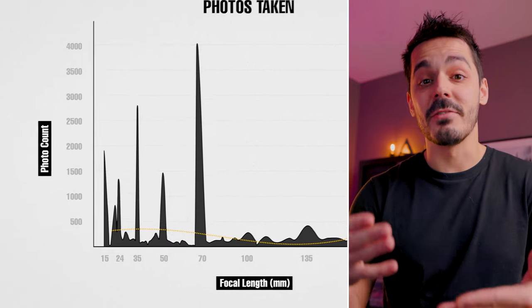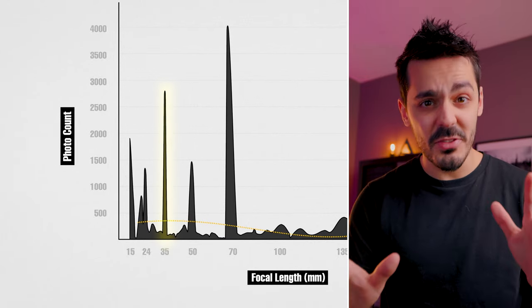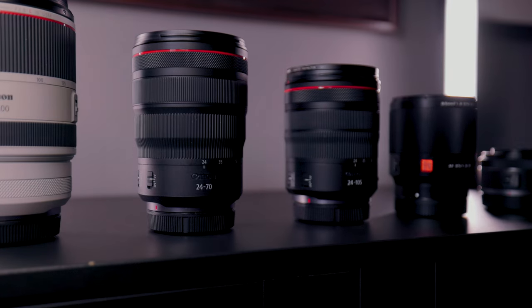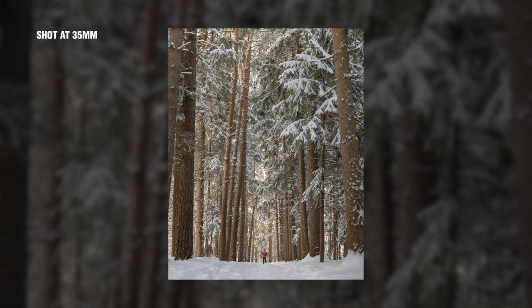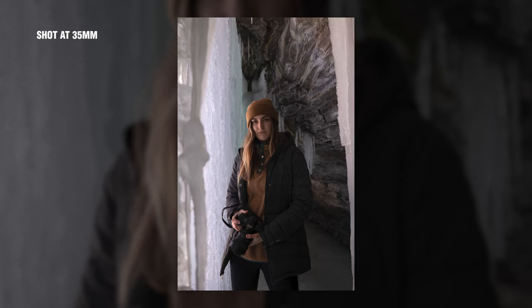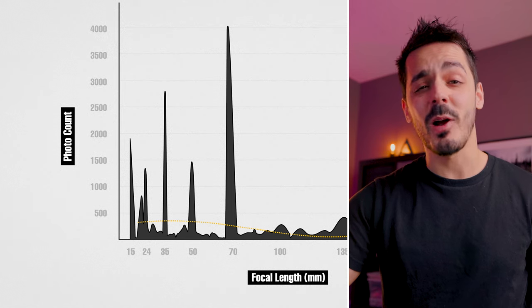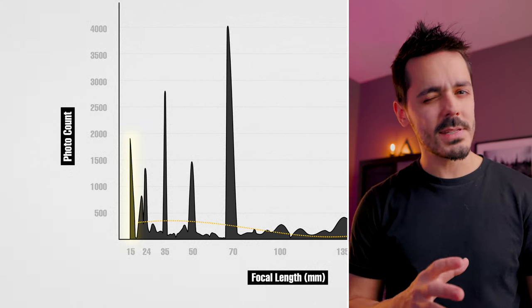Then we have 35mm — that's a great focal length. I use it all the time. I like to zoom in with my wide-angle lens or sometimes zoom out a little bit with my 24-70, because 35 is a really versatile focal length. It's wide enough to shoot landscapes but zoomed in enough to do portraits. Then surprisingly, 15 millimeters is one I use a lot, so we're already seeing that I'm kind of using the extremes of all my lenses.